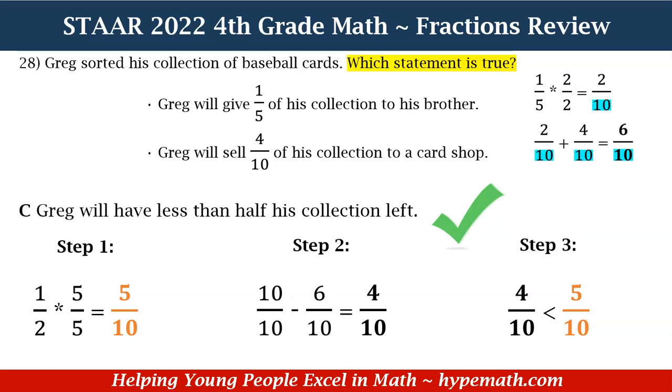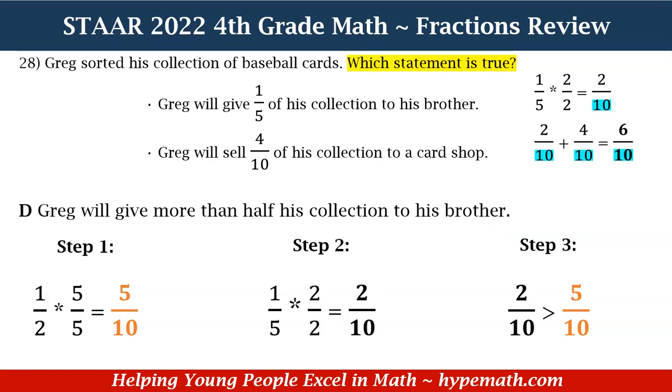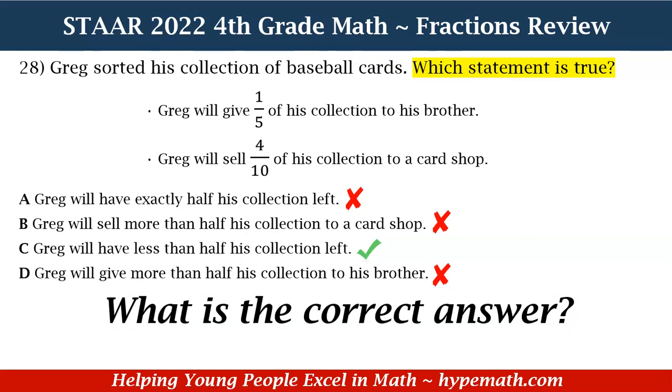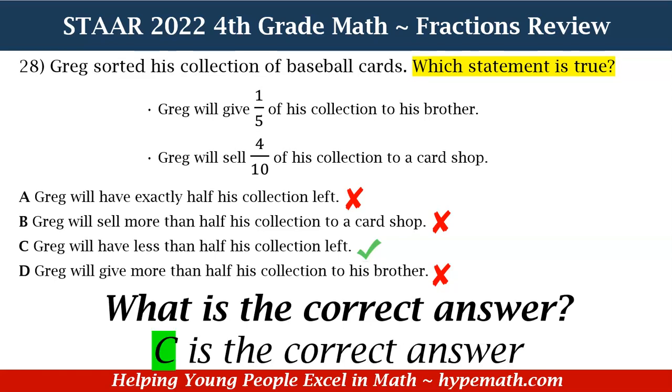Even though we know that C is correct, let's go over D as well. D says Greg will give more than half his collection to his brother. Half of the collection is five-tenths. The equivalent fraction for one-fifth with a denominator of ten is two-tenths. Is two-tenths greater than five-tenths? No, it is not. So our correct answer is C: Greg will have less than half his collection left.